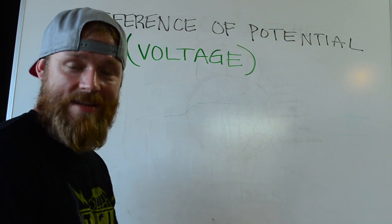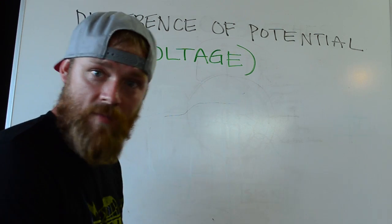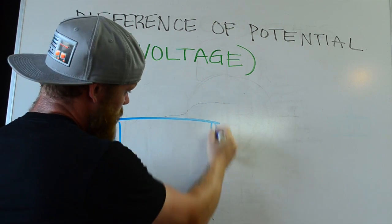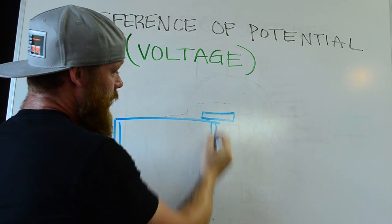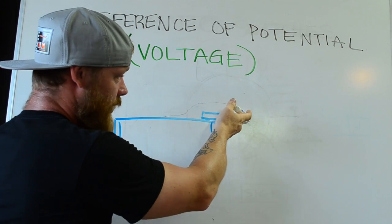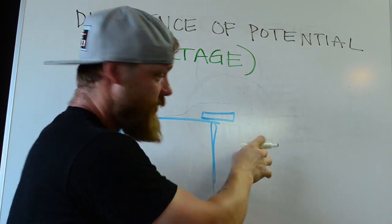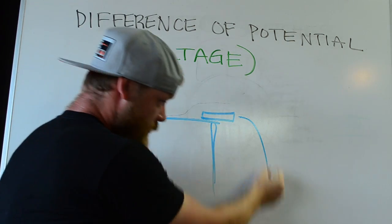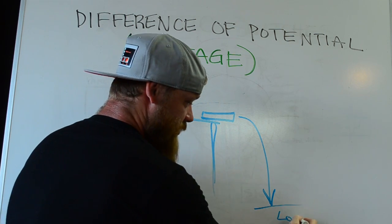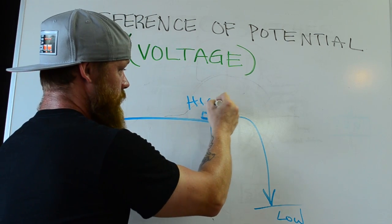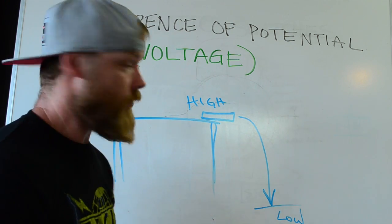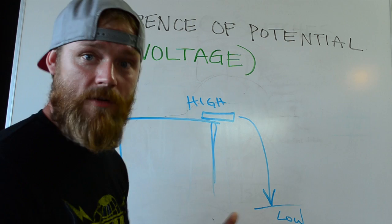So what a difference of potential energy does is it allows movement to happen. Same thing: say you've got a table and a book sitting on the table. Right now there's a difference of potential energy — once the book is pushed, it will move down and hit the floor because the floor is low potential and the table is high potential. Gravity, instead of electricity — same thing. Gravity works off a difference of potential.